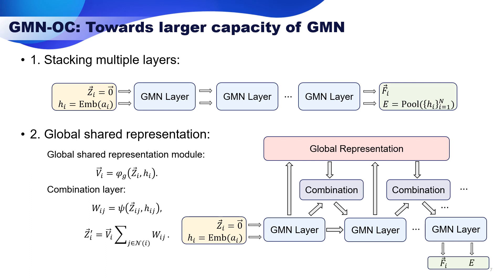The global module is also implemented using our GMN function phi. To combine the global representation with the local representation of each layer, we introduce the combination operation, which first uses our invariant form psi to compute the invariant W_ij, and then multiplies the aggregation of W by the global representation V. The computational flowchart is illustrated in the right figure, where we can see that all modules are densely connected to ensure training stability. The force and energy are similarly obtained from the last GMN layer.